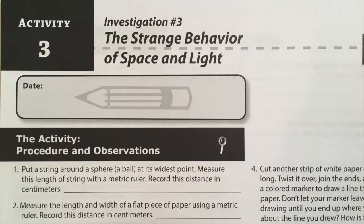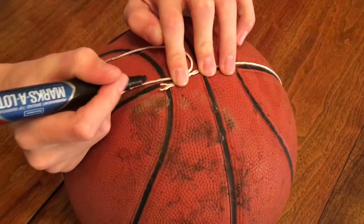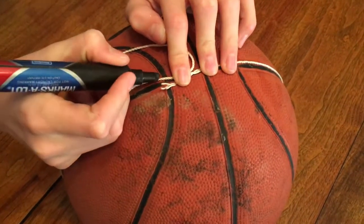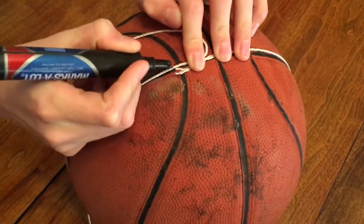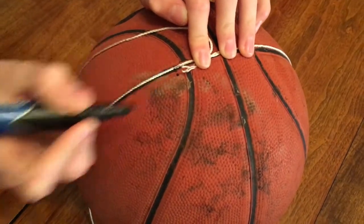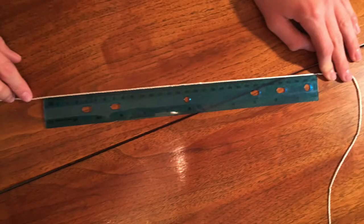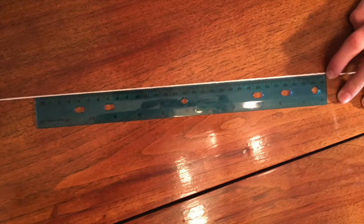In this investigation, we will discuss the different behaviors of space and light. Have students put a string around a ball at the widest point and mark the string with a marker. Use a ruler to measure the length of the string. Determine the circumference of the ball. From this number,